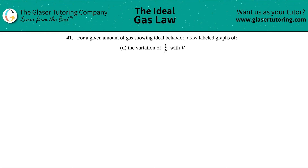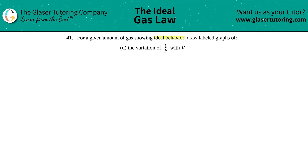Number 41. For a given amount of gas showing ideal behavior, draw labeled graphs. In this case, we have to draw the variation between 1 over P with volume — so 1 over pressure with volume.